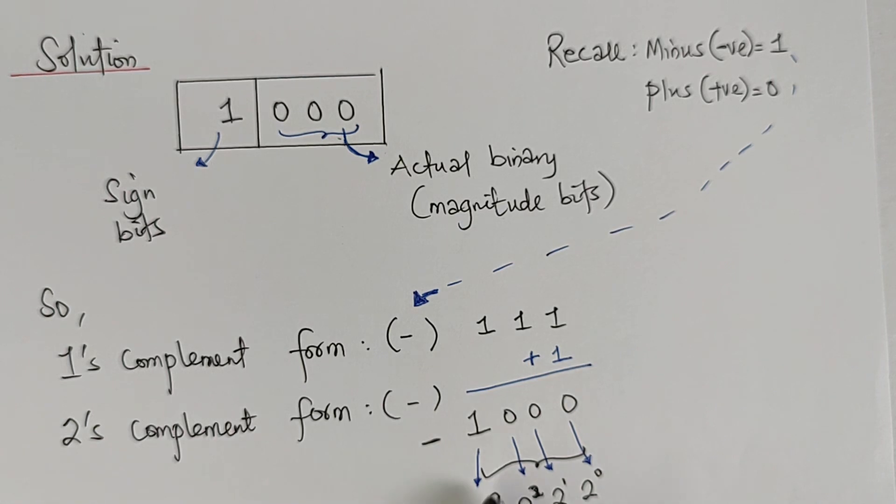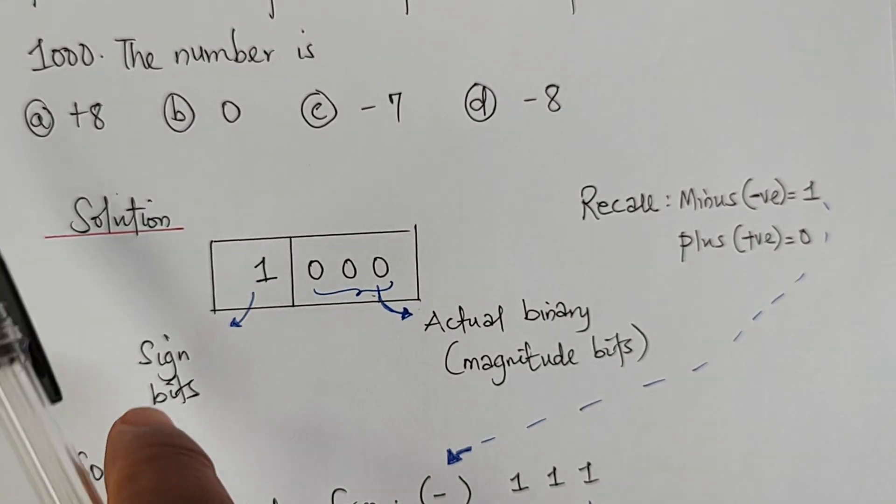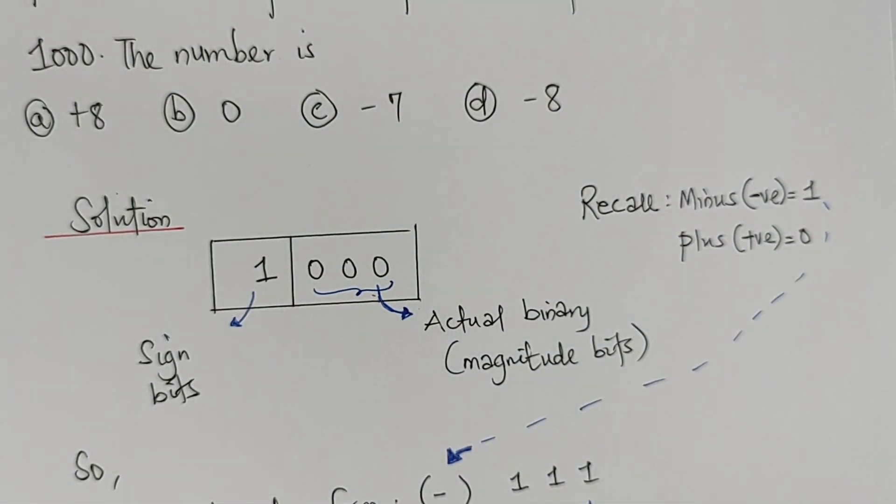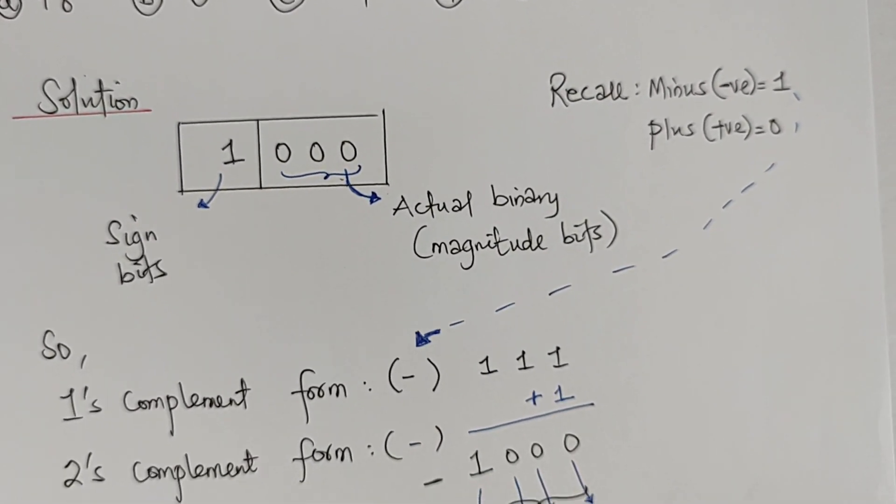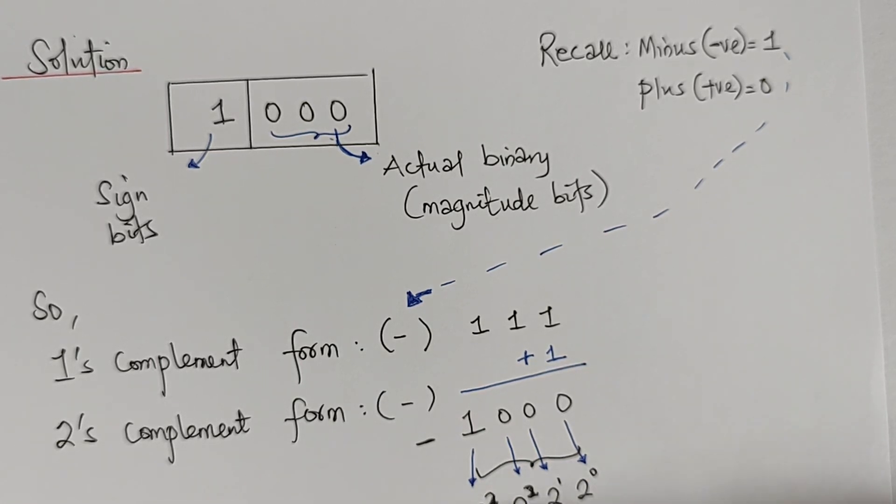At the end of the day, we're going to convert this because we're trying to balance it up with the options. These options we have here are in decimal form, so we want to see what will be the decimal form. For the place value, this is going to take 0, 1, 2, 3. So 2 raised to the power of 0, 2 raised to the power of 1, 2 raised to the power of 2, 2 raised to the power of 3.